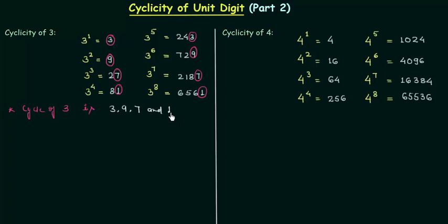There are 4 digits in the cycle. The first digit is 3, the second digit is 9, the third digit is 7, and the fourth digit is 1.